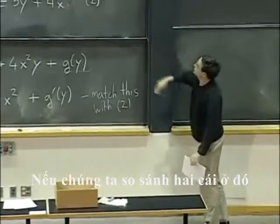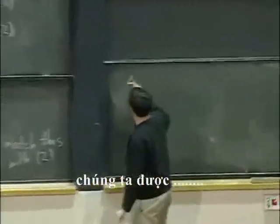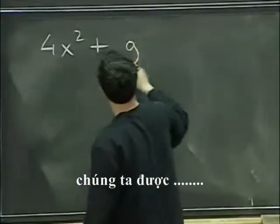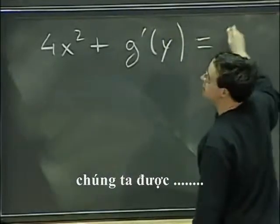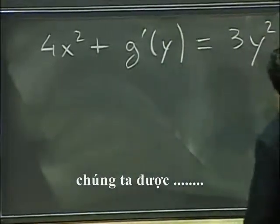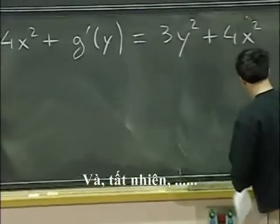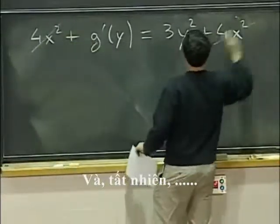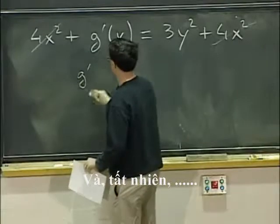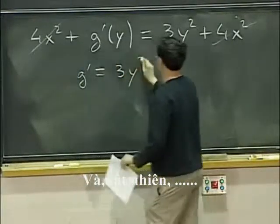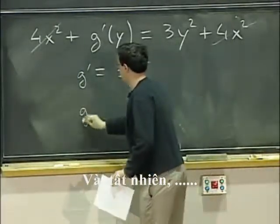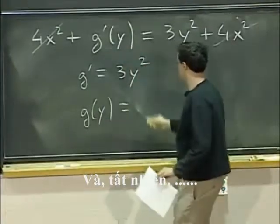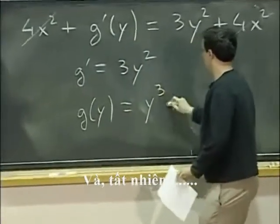OK, so if we compare the two things there, we get 4x squared plus g prime of y should be equal to 3y squared plus 4x squared. And of course the 4x squared go away. That tells you g prime is 3y squared. And that integrates to y cubed plus constant.